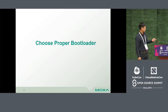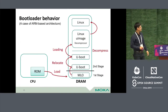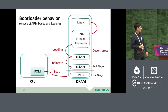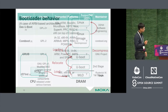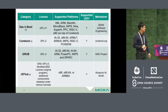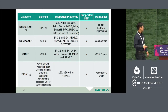First of all, we have to choose the proper bootloader. The bootloader initiates hardware and loads itself into DRAM, then loads the second-stage loader to initialize others, then loads the Linux kernel, which decompresses itself. Typically we use U-Boot for ARM products and GRUB for x86 products. For some experts, they will use coreboot or rEFInd.